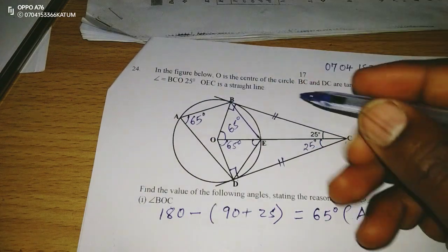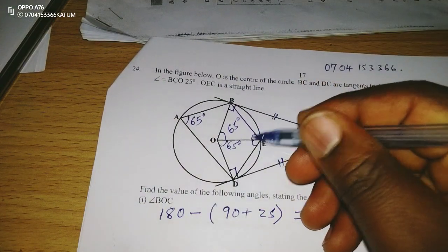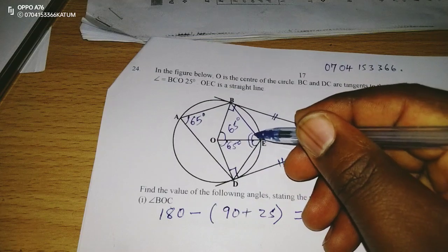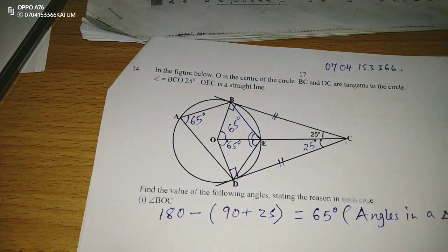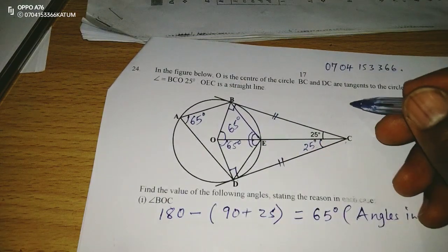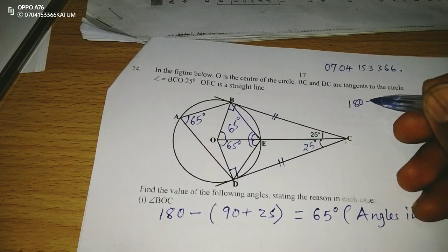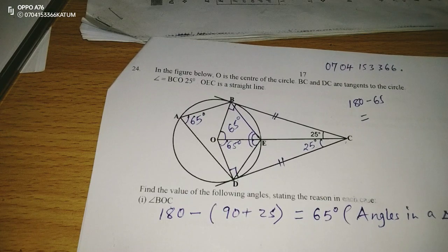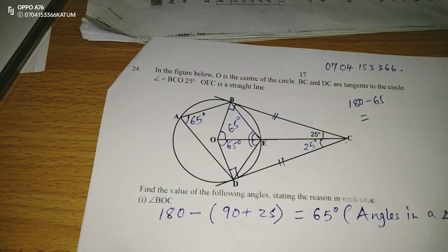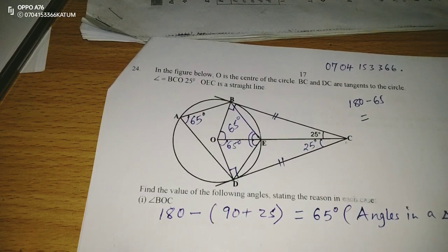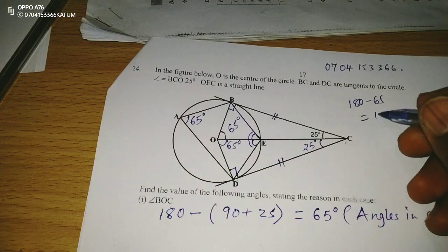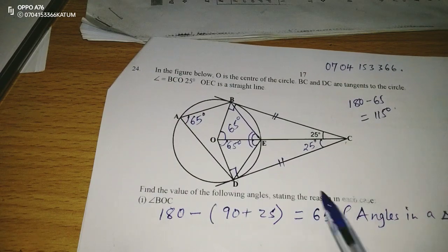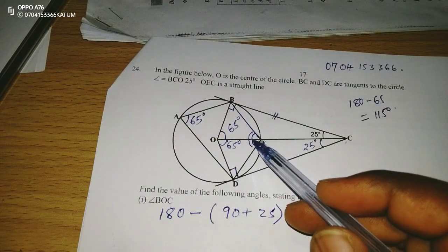We can talk of opposite angles in a cyclic quadrilateral. If this is 65, the angle at this point should be able to give us 180 when added. So the angle at E is going to be 180 minus 65, giving us 115. The whole of this angle is 115.